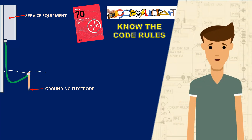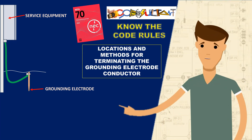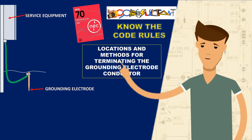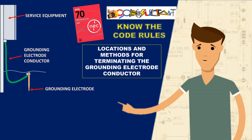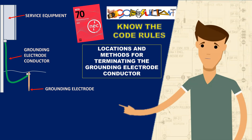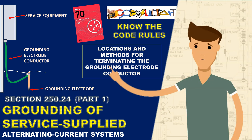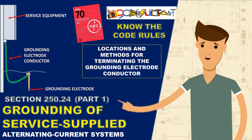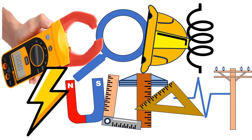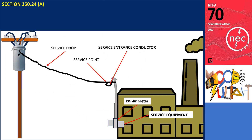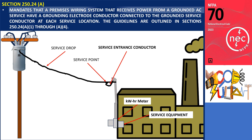During our discussion, we will explore the prescribed guidelines and techniques for connecting the grounding electrode conductor in cases where the premises wiring is supplied from a grounded system. These regulations can be found in Section 250.24 of the code, which pertains to grounding service-supplied alternating current systems. Hello everyone, welcome to the Codesultant channel. Section 250.24(a) mandates that a premises wiring system receiving power from a grounded AC service have a grounding electrode conductor connected to the grounded service conductor at each service location.